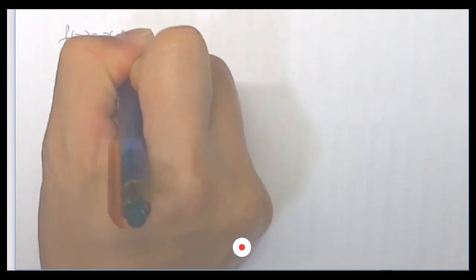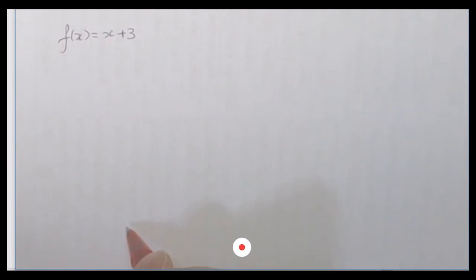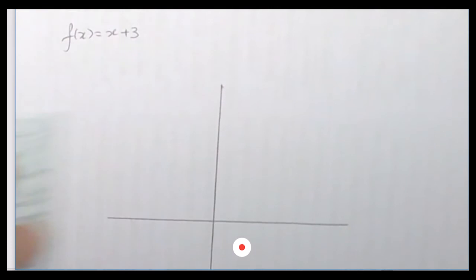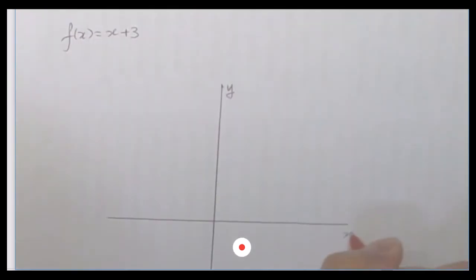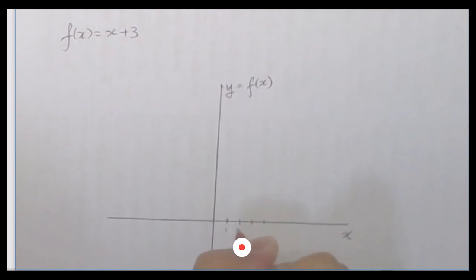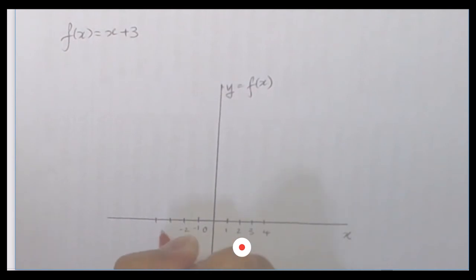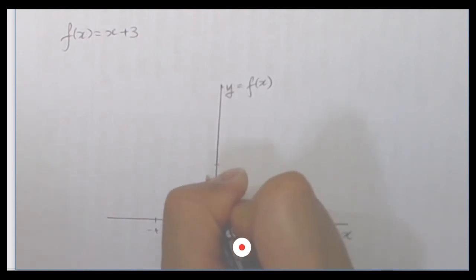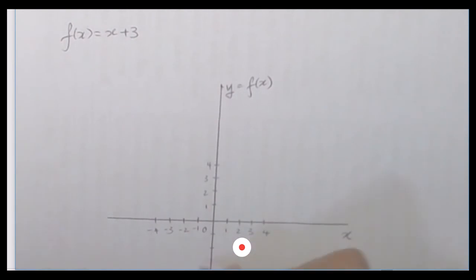Now I am teaching you how to plot a graph of a function. Let's say you have the function f of x equal to x plus 3. Use a piece of paper and a ruler, draw the x-axis and y-axis, and mark down the y-axis and x-axis. Mark the values 1, 2, 3, 4 and minus 1, minus 2, minus 3, minus 4 on both axes. We don't need the negative direction in this case, so just give those markings. Then draw a table.